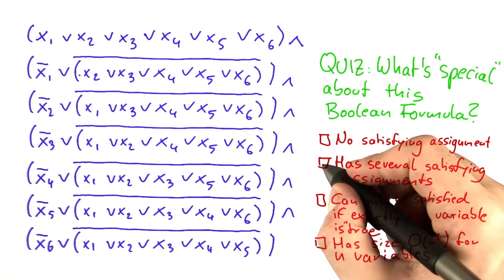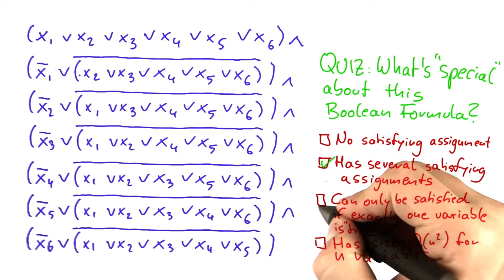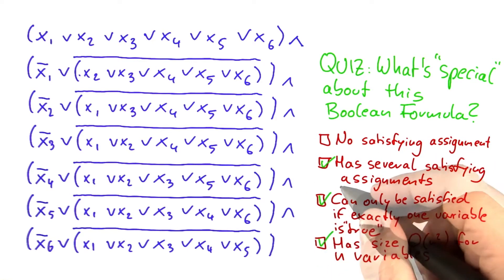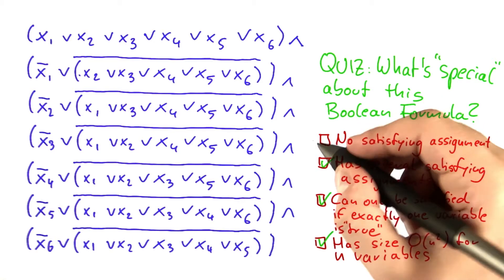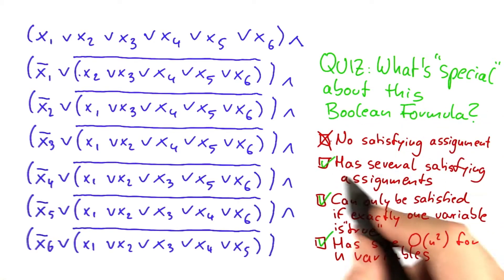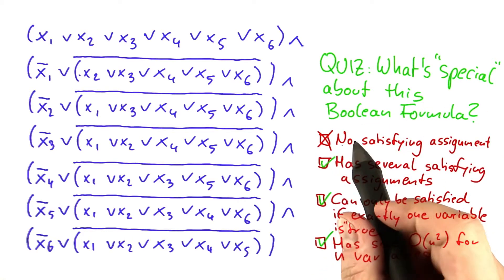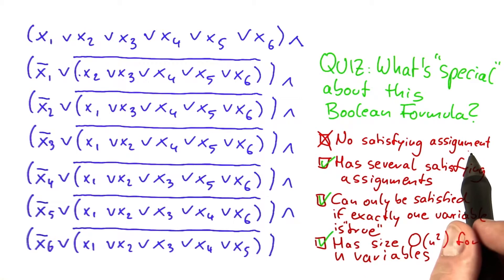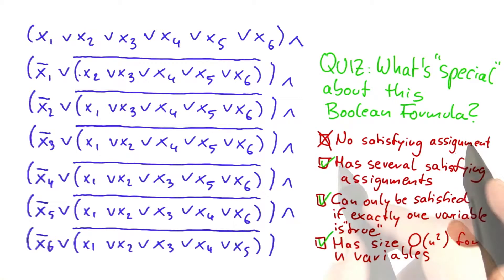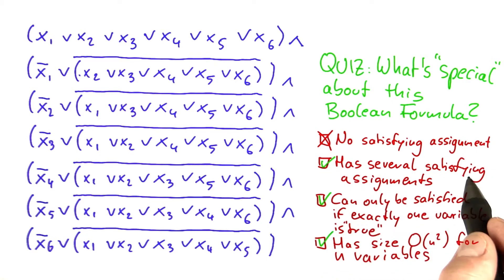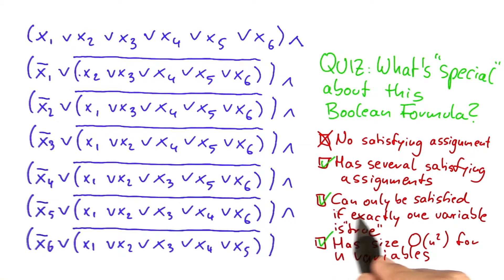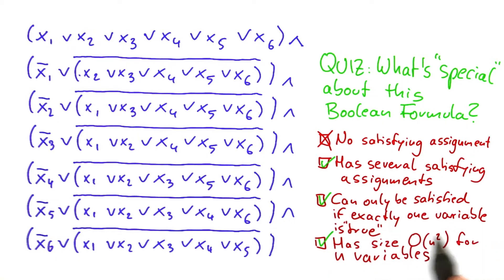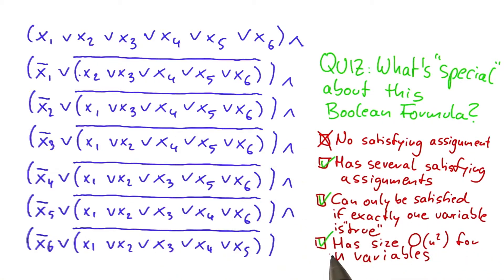The answer is that actually three of those statements — those three down here — are correct. I'll explain them in a minute. And this one here is not correct. So the formula indeed does have a satisfying assignment — not only one, it actually has several satisfying assignments. But each of those assignments has the property that exactly one variable is set to true. I'll show you in a second how that works.